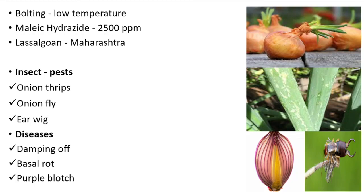Basal rot is caused by Fusarium oxysporum. In infected plants, you can initially observe yellowing of leaves and stunted growth, later leading to drying of leaves from tip downwards. Purple blotch is caused by Alternaria porri and is an important disease in onion. Symptoms include initially whitish minute spots with a purple center, leading to chlorosis, and in the chlorotic region black concentric rings can be observed, followed by drying of leaves from tip downwards.